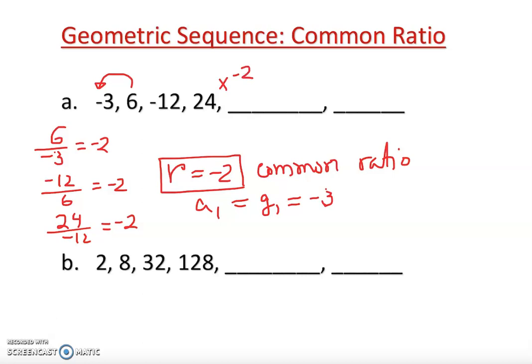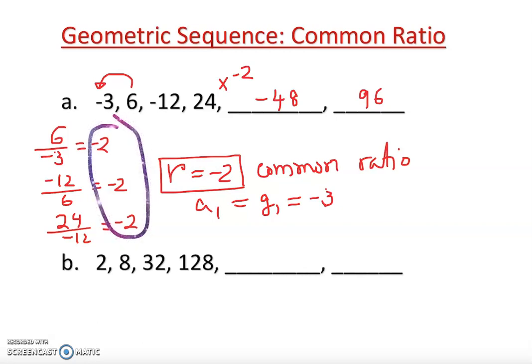So if I multiply by -2, it should give me -48, and multiplying again by -2 gives 96. You can keep going to find any missing number. We know this is a geometric sequence because we have a common ratio — every time we divide, we get the same common ratio. Just like in arithmetic sequences we subtract to get a common difference, in geometric sequences we divide to get a common ratio.